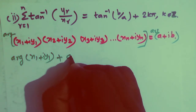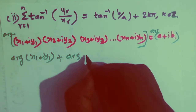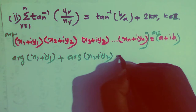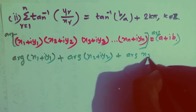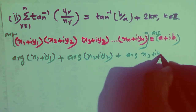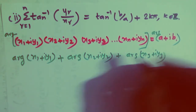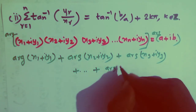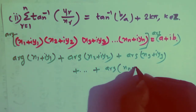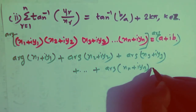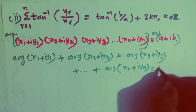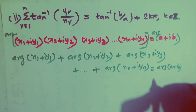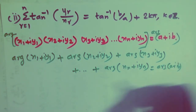Using the argument property: argument of (x1 + iy1) plus argument of (x2 + iy2) plus argument of (x3 + iy3) plus and so on plus argument of (xn + iyn) is equal to argument of (a + ib). That is the answer.